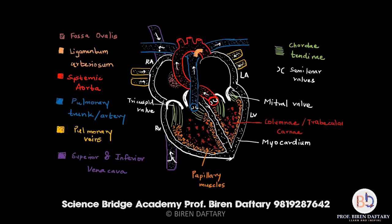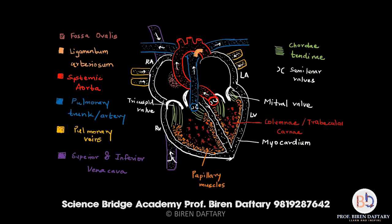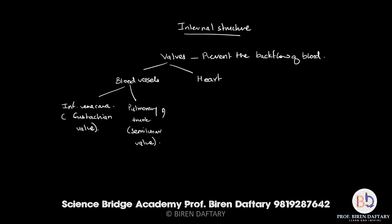The next valve is present in the pulmonary trunk, which opens from the right ventricle. This valve is called the semilunar valve — the cross-section of the valve appears like a half moon, which is why it is called semilunar. Similarly, the aorta also has a valve, which is also called the semilunar valve. So semilunar valves are present in both the pulmonary trunk and the aorta.